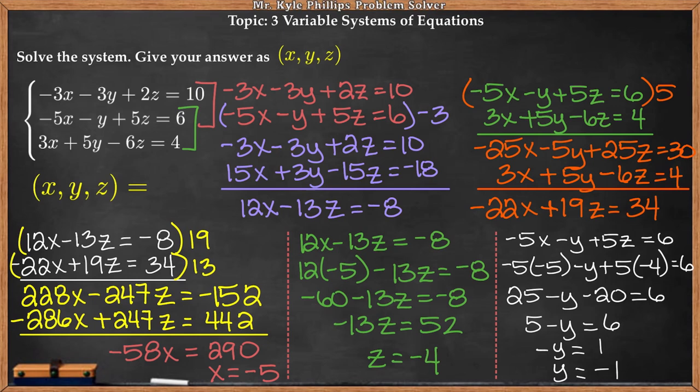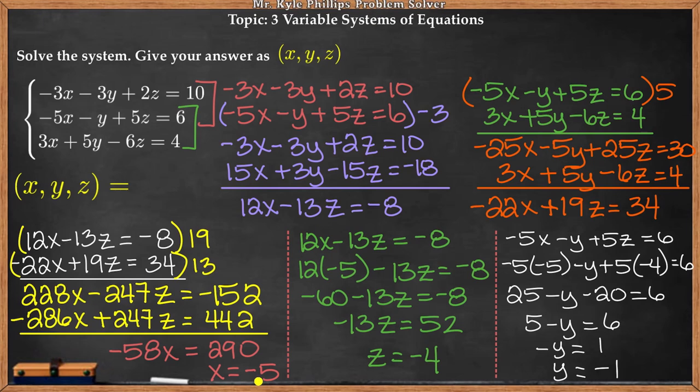So I have found all of my solutions for x, z, and y. Remember, they want the solution expressed as a coordinate (x, y, z). So we'll write our solution as the coordinate negative 5, negative 1, negative 4. And there's our answer.